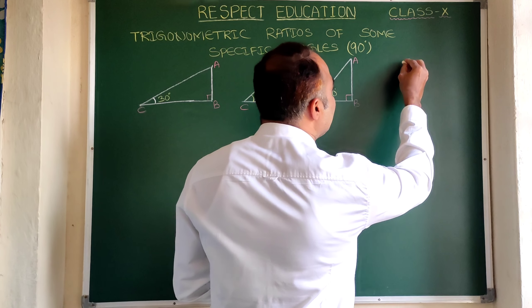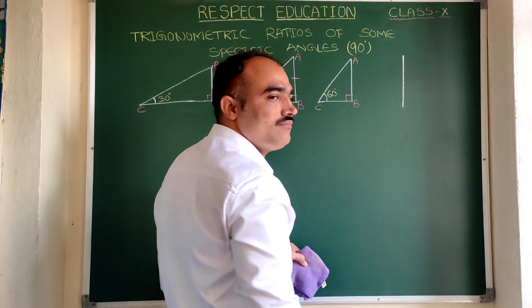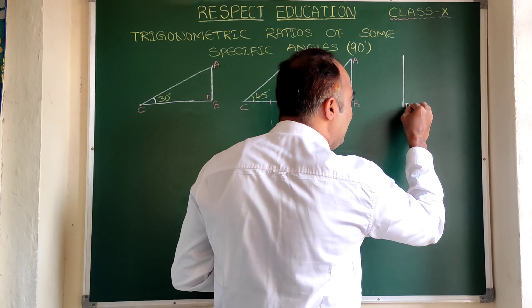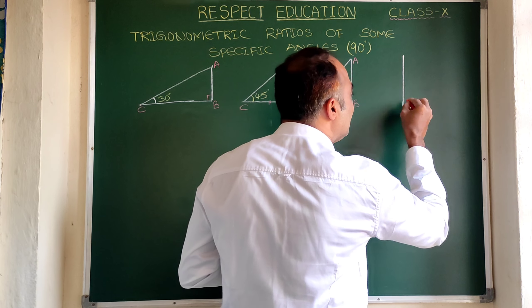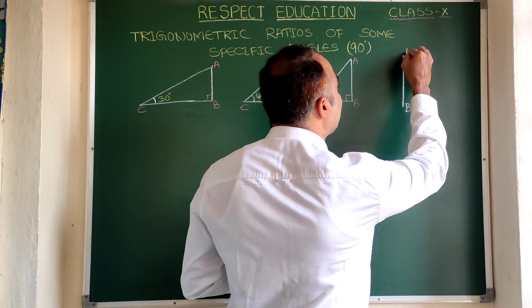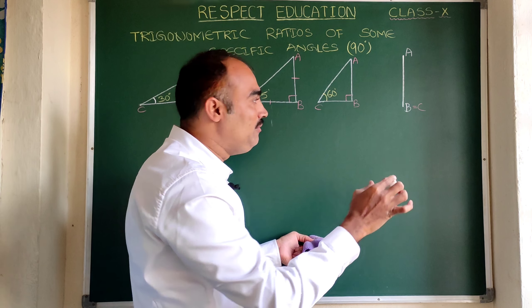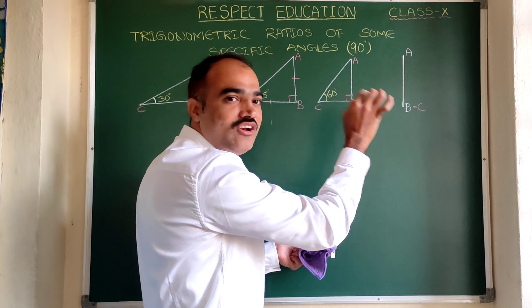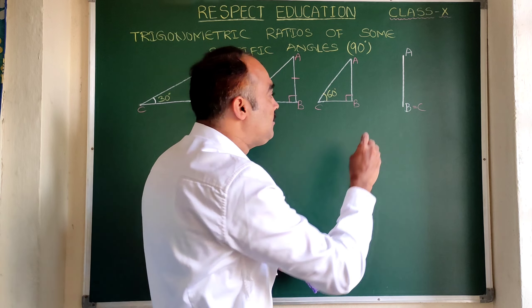So here you can understand that the triangle will be like this only. Why? Because here is only B and there C is also there. So here angle B, angle C, both are 90 degrees and A will be here. Is it clear? Actually, it will be very difficult to say that this is a triangle, but the triangle will be like that only. Because here C coincides with B.